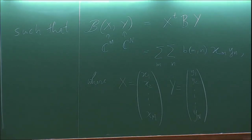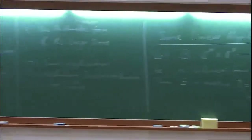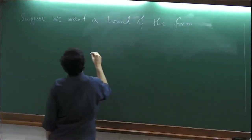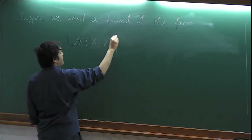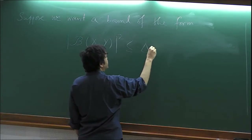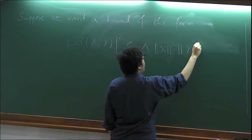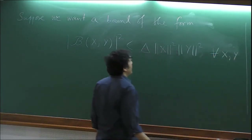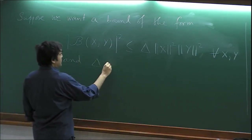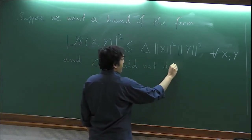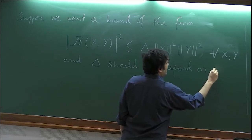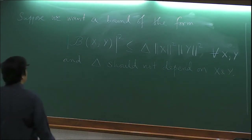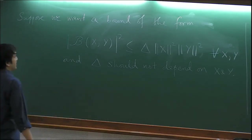Suppose we want a bound of the form |B(X,Y)|^2 ≤ δ · ‖X‖^2 · ‖Y‖^2, and this should hold for every X and Y. So δ should not depend on X and Y — δ can depend only on the form, nothing else.